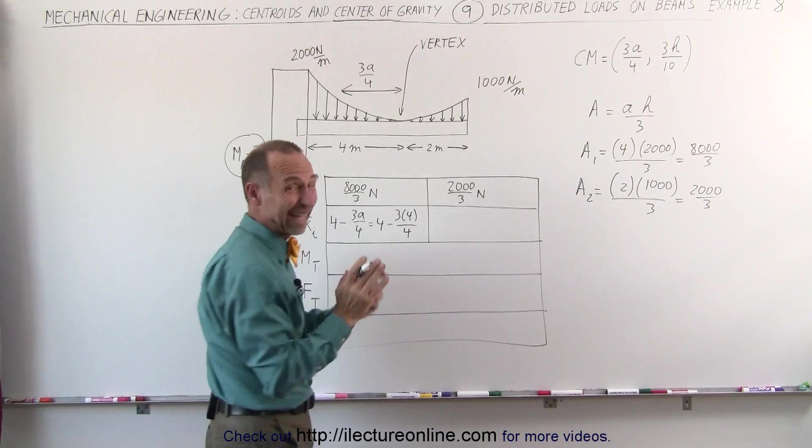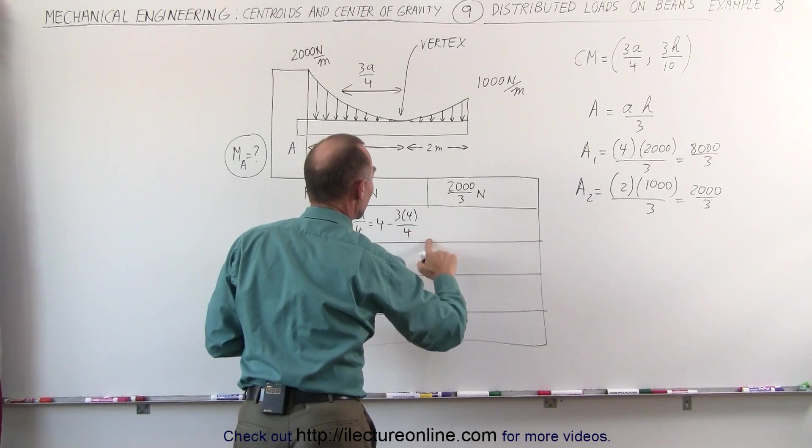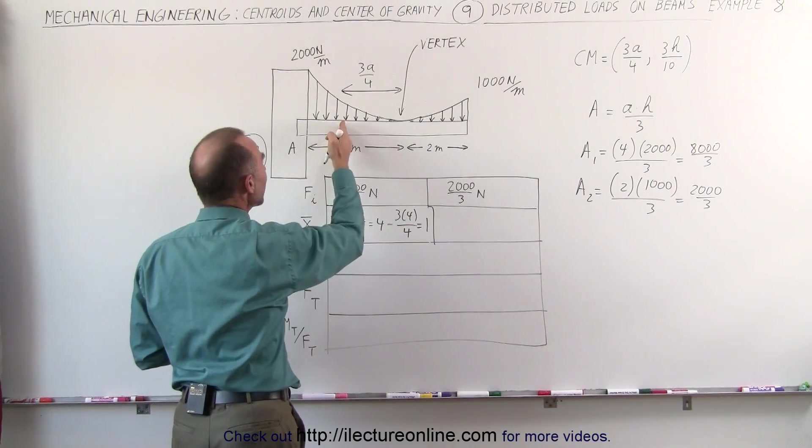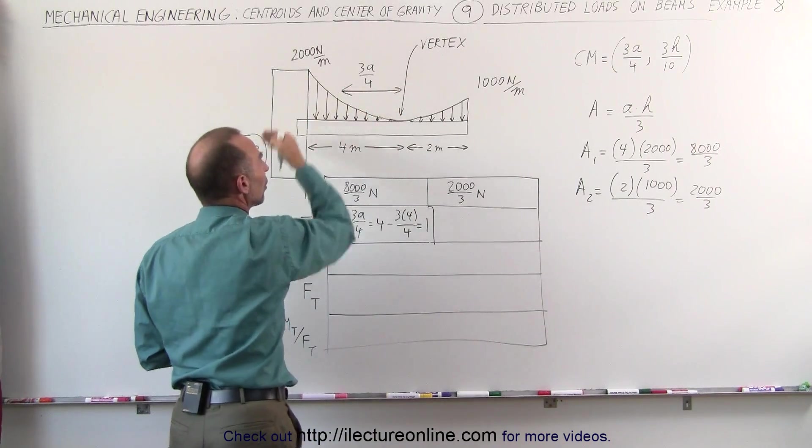Oh, that would be 3, I'm sorry, I'm getting ahead of myself. Let me move this over just a little bit, that is equal to 1. So 1 meter from A is the centroid of this particular load segment.